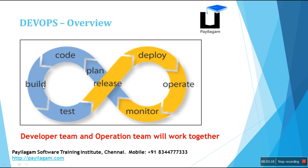Once coding is done, we build the software, test it, and then release it. The customer support or technical support team will deploy the software on the client side. Users then operate the software and we monitor it. This cycle does not end — it continuously runs. DevOps is a complete lifecycle.